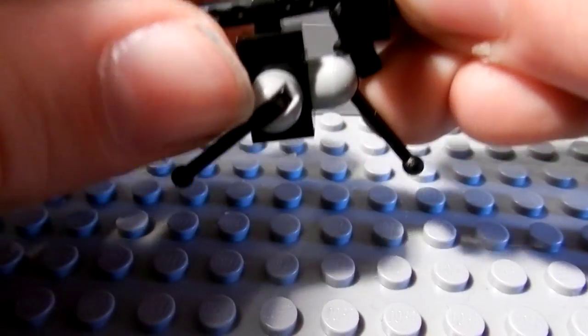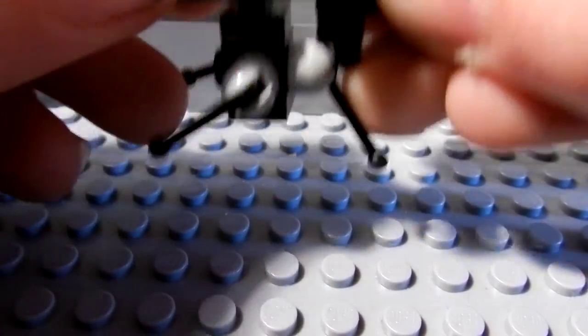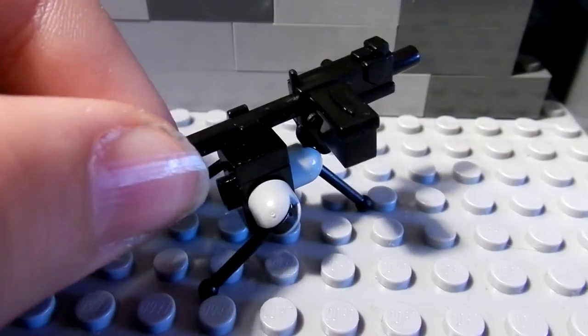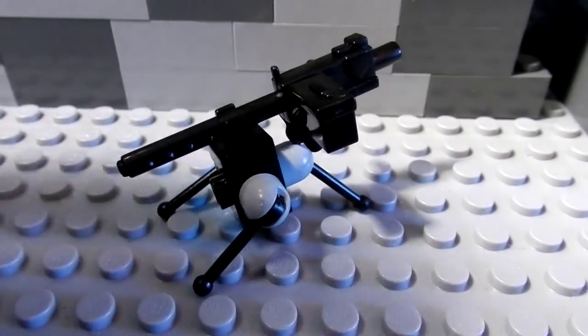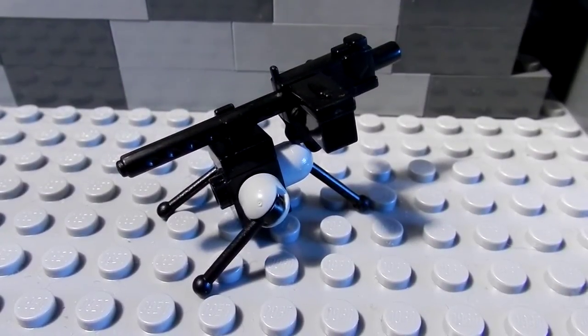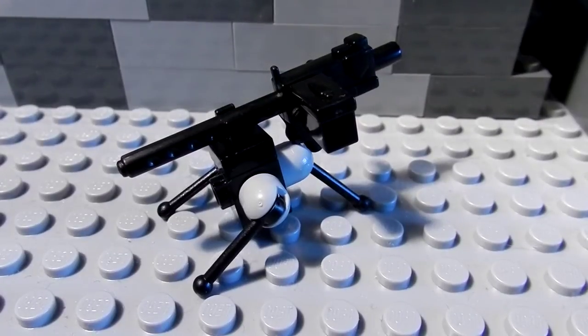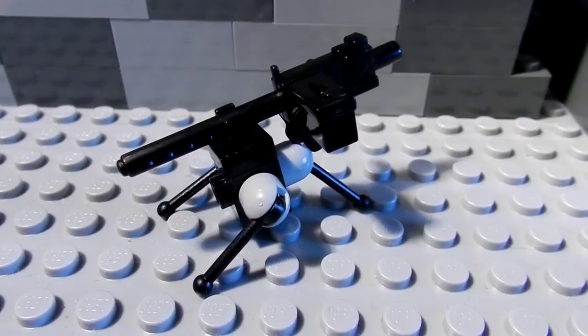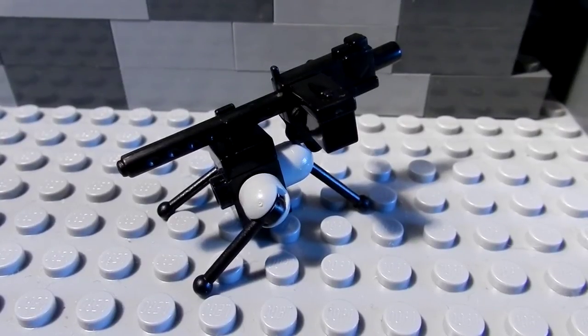You get something like this which is quite nifty and useful if you're building a MOC or something like that. So that's how you build a tripod for a Browning machine gun, and it doesn't have to be a Browning machine gun.